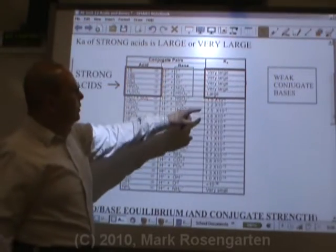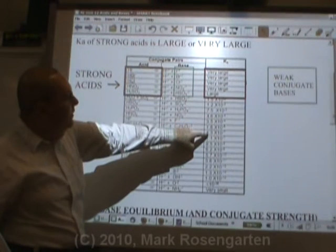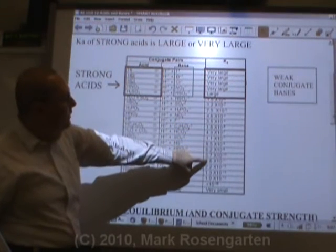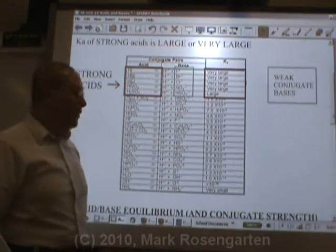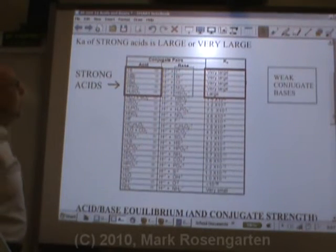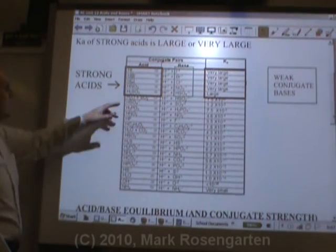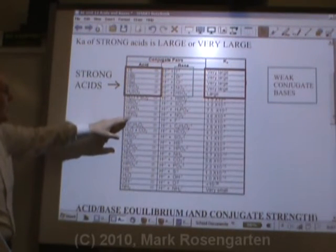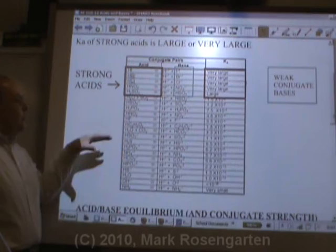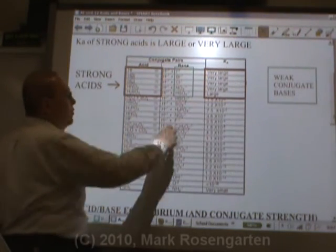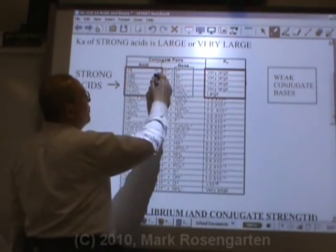As you go down the table, you'll notice that the Ka decreases: 10 to the negative 3rd, 10 to the negative 4th, 5th, 7th, 8th, 10th, 11th, 13th, 14th — smaller than 10 to the negative 13th and very small. What that means is the forward reaction is happening to less and less of a degree. These acids are getting less and less soluble as you go down the chart. If the forward reaction is barely happening, that means as you go down the table, the reverse reaction is happening more strongly.